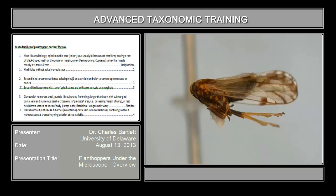Both of these keys are from an upcoming publication. Neither of them are published yet, but it's in a manuscript that's been accepted for publication and should be out any time in the Memoirs of the American Entomological Society. This publication will provide keys to genus for all planthoppers north of Mexico.